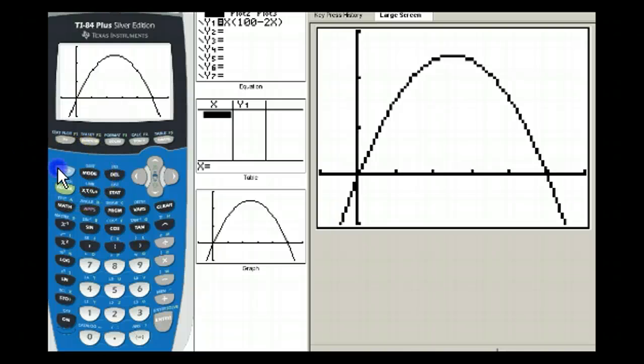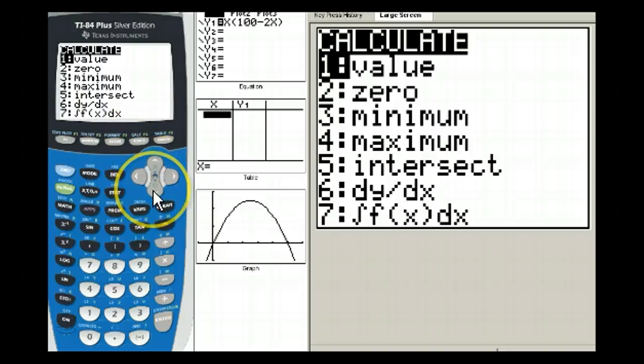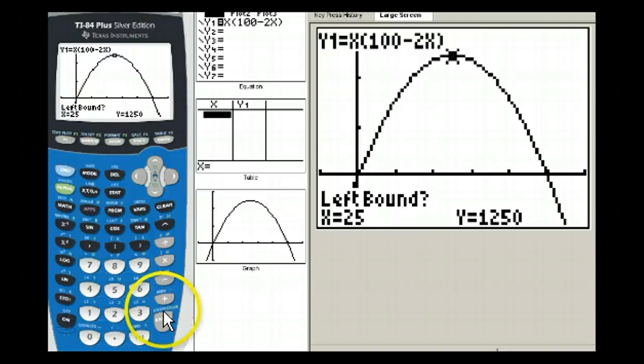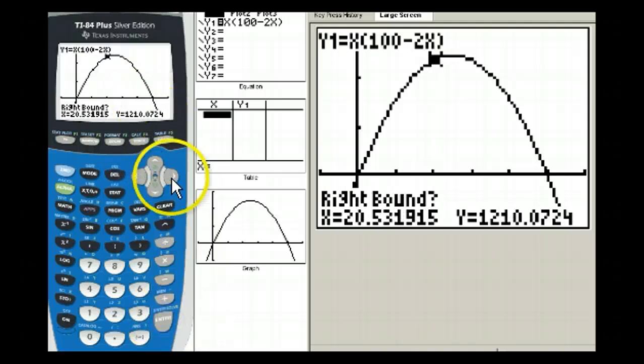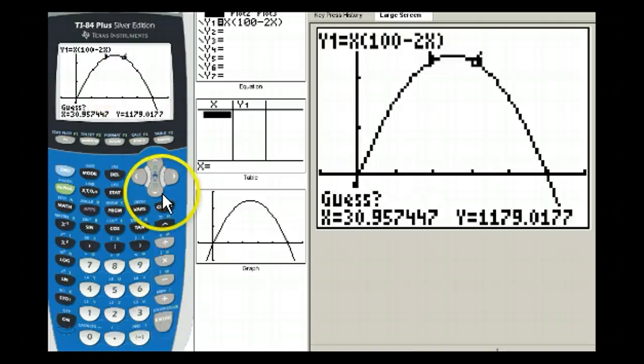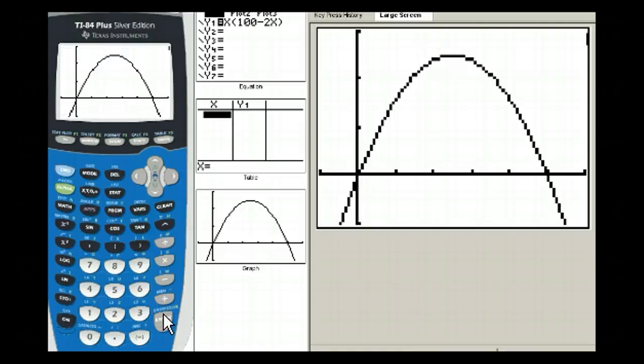So what do we need to do? We need to find the vertex. So second, calc, and the vertex will either be at a maximum or a minimum for the quadratic, in this case a maximum. So left bound, put the cursor somewhere to the left of the max, enter. Right bound, put the cursor somewhere to the right of the maximum, enter. Guess, put the cursor where you think it's going to be, enter. And it tells us, an x value of 25 will give a y value of 1,250.